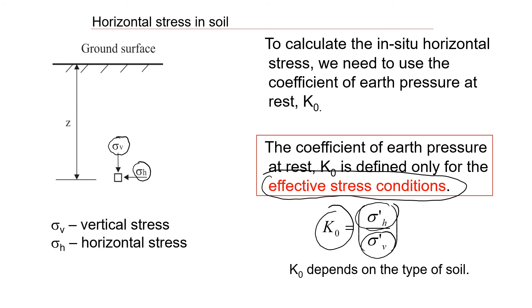The coefficient of earth pressure at rest K0 typically depends on the type of soil and may vary from 0.8 to sometimes 1.1 or 1.2.